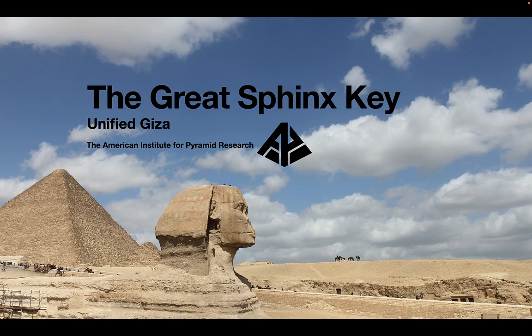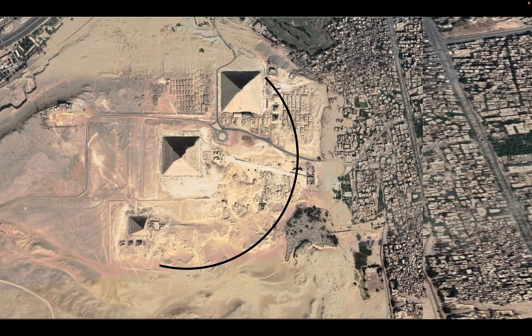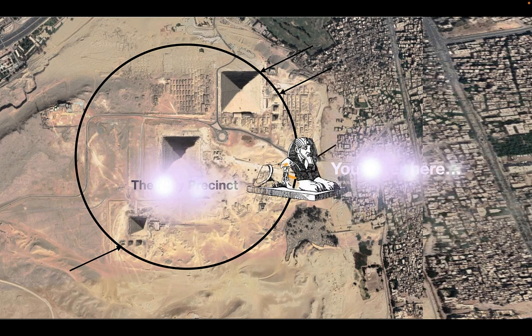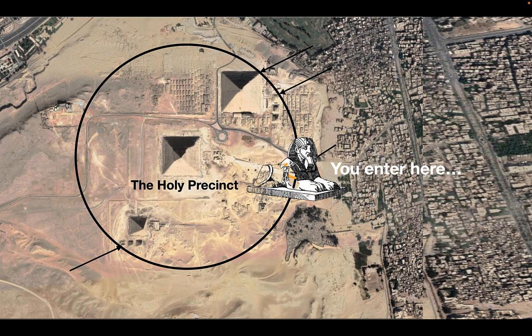The Great Sphinx is a key to the Giza Plateau — it's part of the unified plan that's plainly there. If we circle the giants touching the corners of the Menkaure satellite, Khufu's northeast corner and his satellite, that line goes right through the center of the Sphinx, showing that the Sphinx is part of this plan. The Sphinx is the entry point — the key to the secrets in Giza.